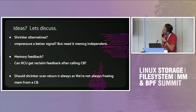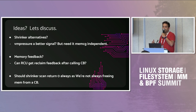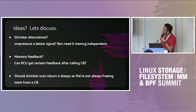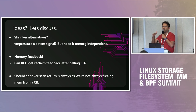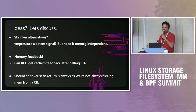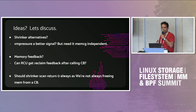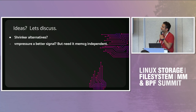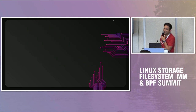Another idea: if we could get feedback from the memory subsystem that executing callbacks actually did something to memory, we could use that as a signal — though that's probably very difficult to implement. On the shrinker scan function: since we're not really freeing objects directly, should we return zero? The response from the audience suggests that won't improve behavior. The conclusion: we should probably get rid of the shrinker completely and do something better.